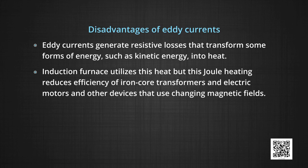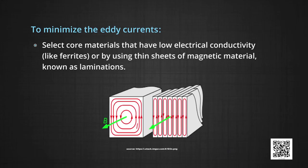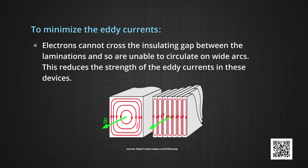Eddy currents generate resistive losses that transform some form of energy such as kinetic energy into heat. But this Joule heating reduces efficiency of iron core transformers and electric motors and other devices that use changing magnetic fields. In order to increase the efficiency of these devices, eddy currents should be minimized. This can be done by selecting core materials that have low electrical conductivity like ferrites, or by using thin sheets of magnetic material known as laminations. Electrons cannot cross the insulating gap between the laminations and so are unable to circulate on wide arcs. This reduces the strength of the eddy currents in these devices.